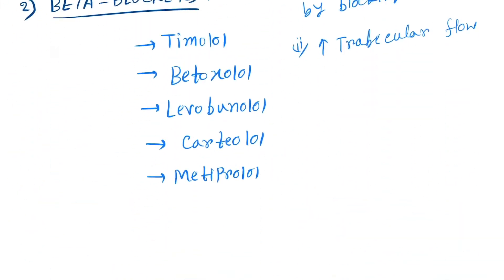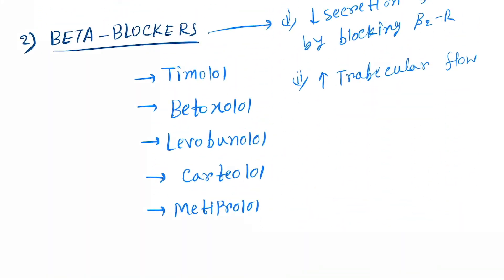The beta blocker drugs—you don't need any mnemonic here—include timolol, betaxolol, levobunolol, cartiolol, and metiprolol.